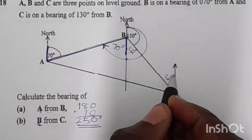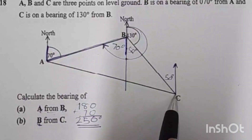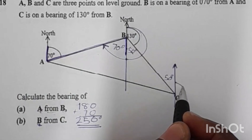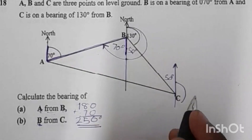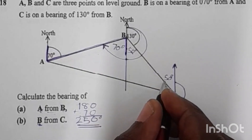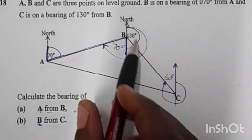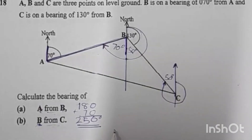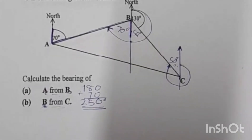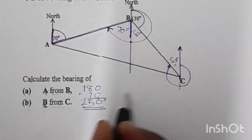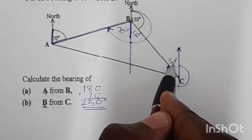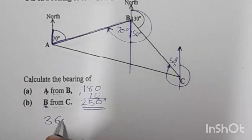The bearing of B from C is measured from the north. We move clockwise until we reach the line that connects B and C. A full turn is 360 degrees, and we have 50 degrees on this side. So to find the bearing of B from C we subtract: 360 minus 50.